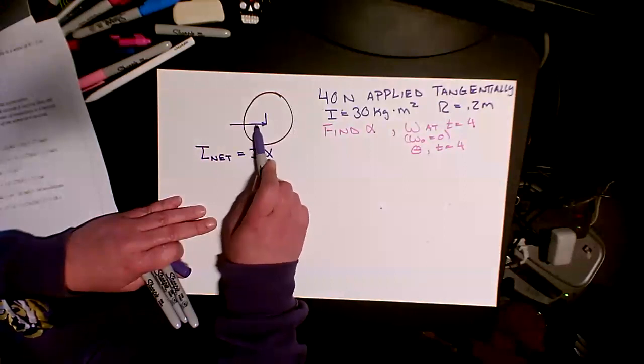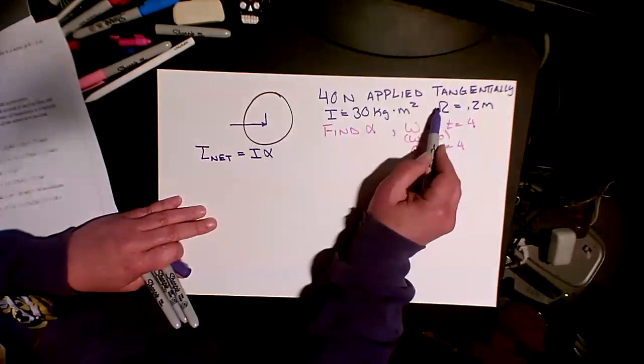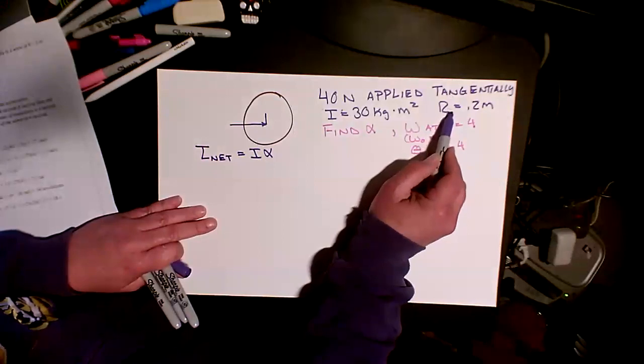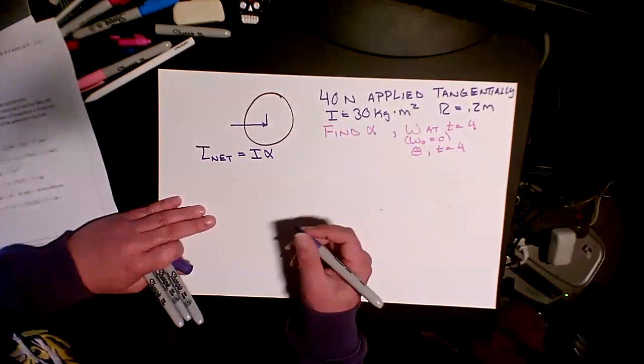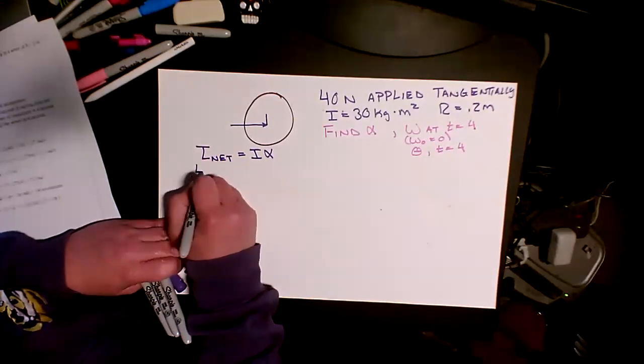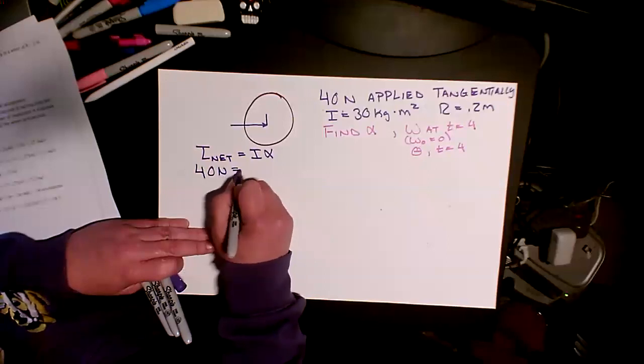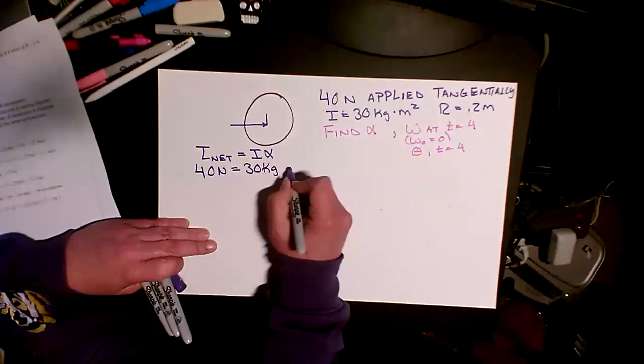And then it says to a wheel at R equals 2. So the force is being applied at this 0.2 meters. That's not the radius of the wheel. That is where the force is being applied. We've been given the I, so I don't need the radius of the wheel. So let's see. I have my 40 newtons. 40 newtons equals my 30 kilograms times...